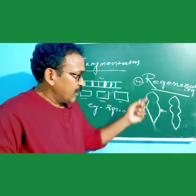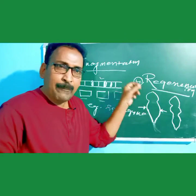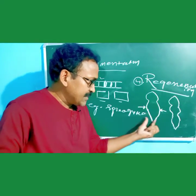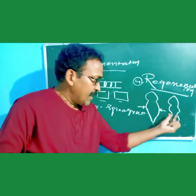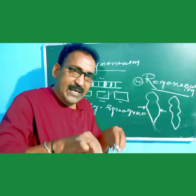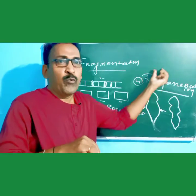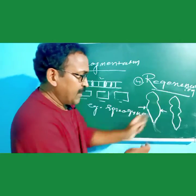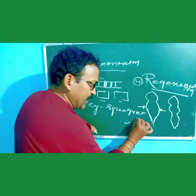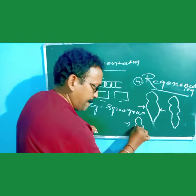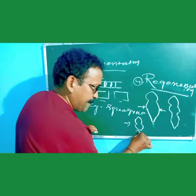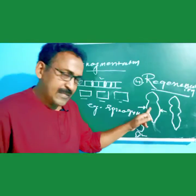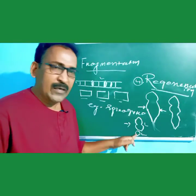So in Planaria, constriction takes place in the middle. When the anterior end is fixed and the posterior end moves forward it gets constricted. Similarly, when the posterior end is fixed and the anterior end moves forward, it also gets stressed and constricted, forming two individual pieces.